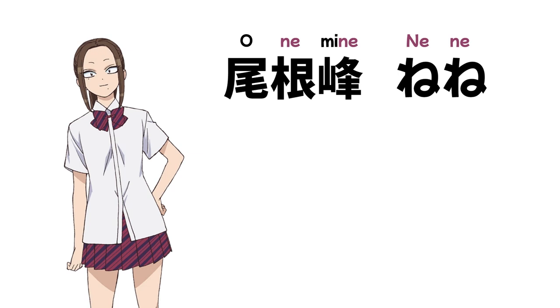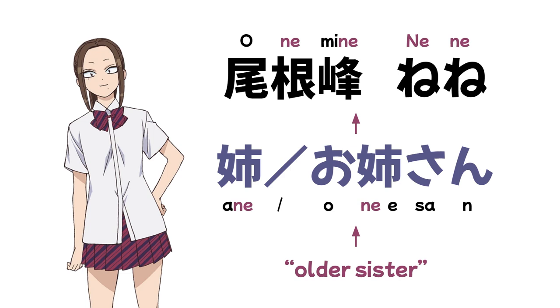Onemine Nene: her name is very appropriate because she has four younger siblings, and she's one of the more reliable and responsible students in the class. In a way, she's everyone's 'Onee-san' — big sister.